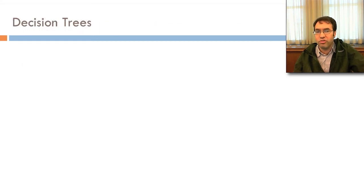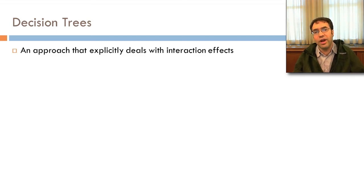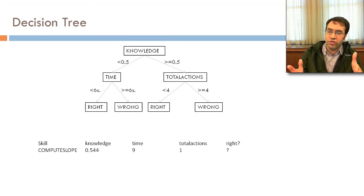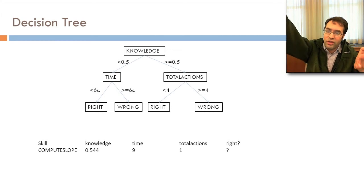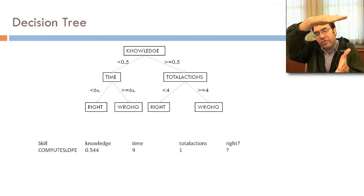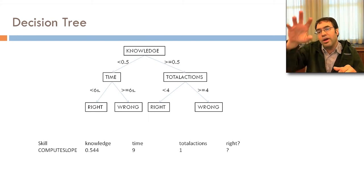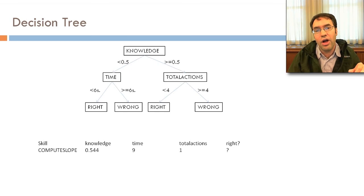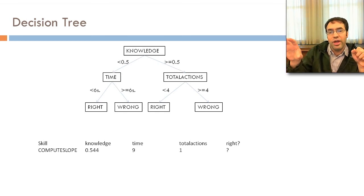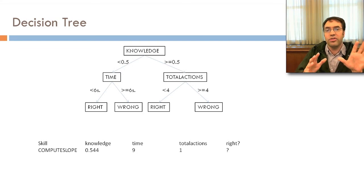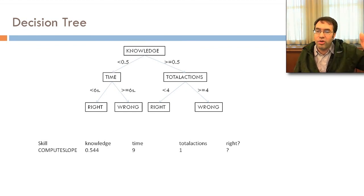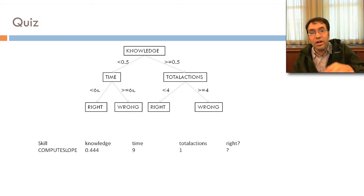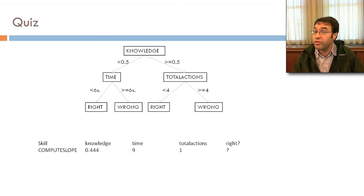Logistic and step regression are good when interactions aren't particularly common. You can give them interaction effects through automated feature distillation, but it's not optimal. Instead, you may want to use algorithms like decision trees, which deal more explicitly with interaction effects. Here's an example: if knowledge is less than 0.5 and time is less than 6 seconds, the student is right; if knowledge is less than 0.5 and time is greater than or equal to 6 seconds, the student is wrong. If knowledge is greater than or equal to 0.5 and total actions is less than 4, the student is right; otherwise wrong. With knowledge 0.544 and total actions 1, we go right and the student is right.